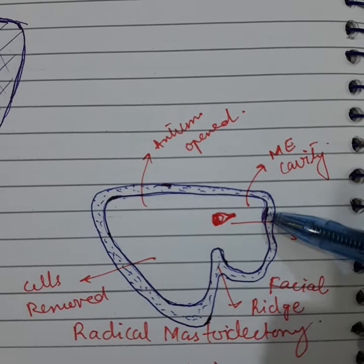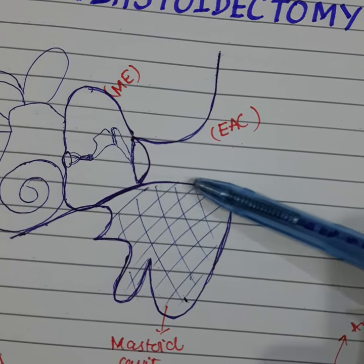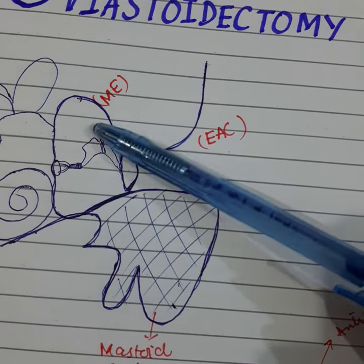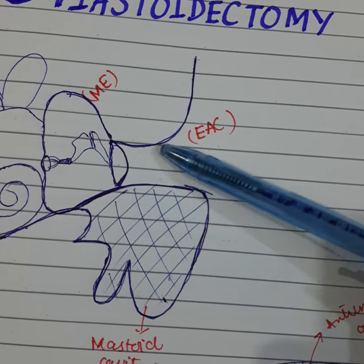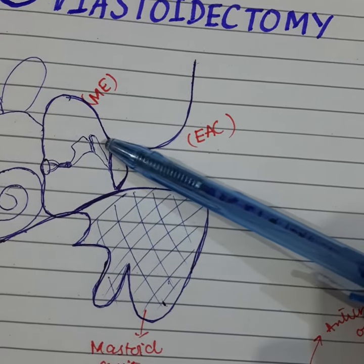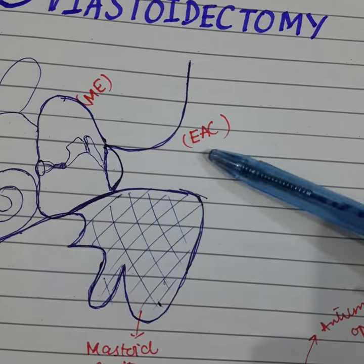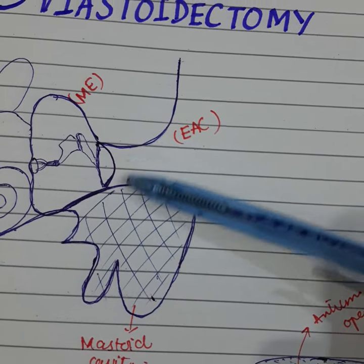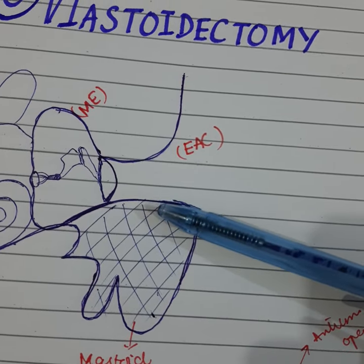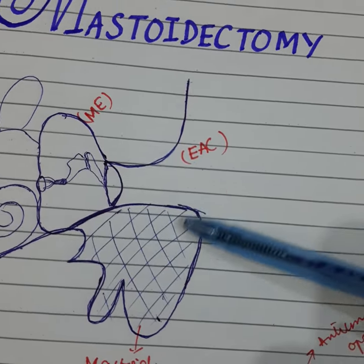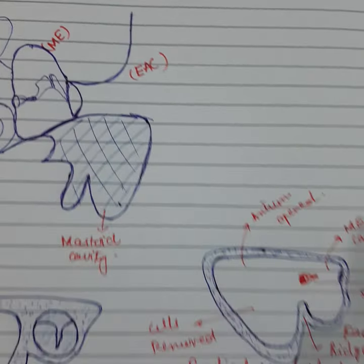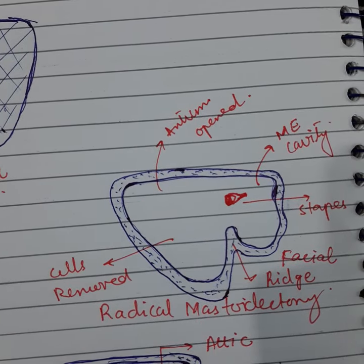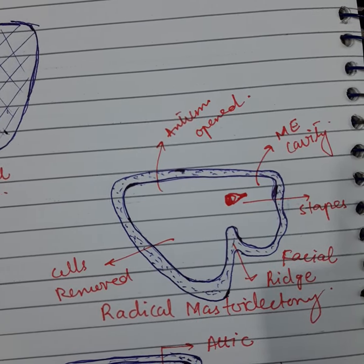In radical mastoidectomy, as the posterior meatal wall and the lateral attic walls are removed, the whole of the middle ear cavity and the mastoid cavity become a single large cavity and both are opened directly into the external auditory canal. Therefore, meatoplasty is also done, which is the excision of cartilage to widen the external auditory canal. Hearing is not preserved in the radical mastoidectomy.